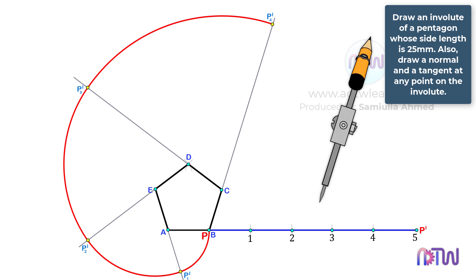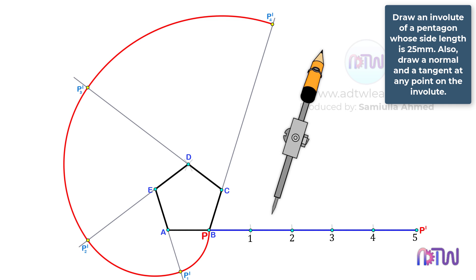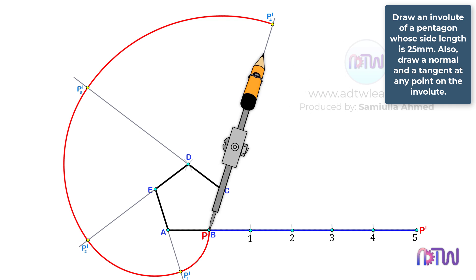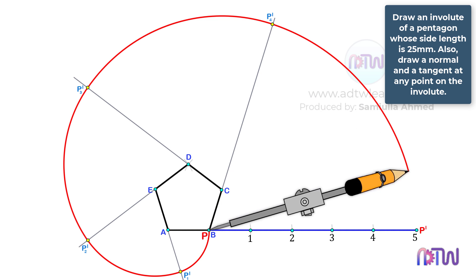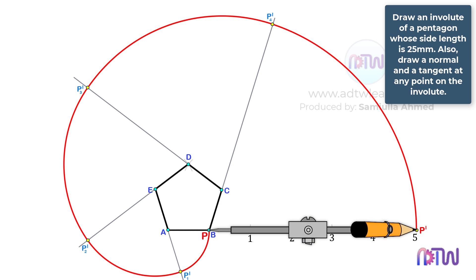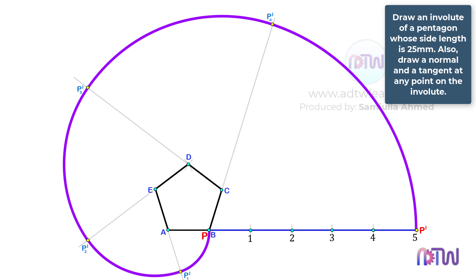At last, adjust the compass to the length between points B and P4-, and using point B as a center, draw an arc from P4- up to this horizontal line. This is the required involute of a pentagon.